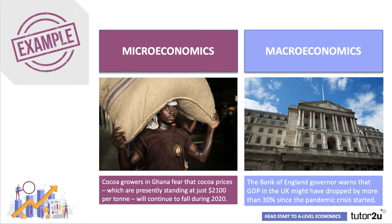On the macroeconomics side, the Bank of England governor warns that GDP in the UK may have dropped by more than 30% already since the pandemic crisis started, and of course the UK government introduced effectively a lockdown on the economy a few weeks ago.